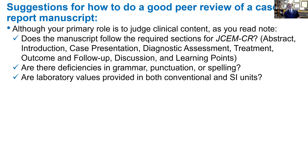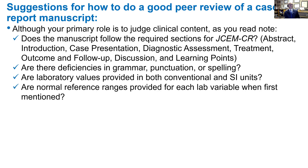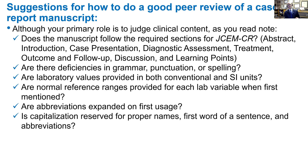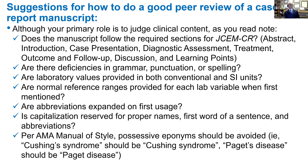Laboratory values should be provided in both conventional and SI units. The normal reference range should be provided for each lab variable when it's first introduced. Abbreviations should be expanded on first usage. Capitalization is reserved for proper names, the first word of a sentence, and abbreviations. Per the AMA Manual of Style, possessive eponyms should be avoided — Cushing's syndrome should be Cushing syndrome, and Paget's disease should be Paget disease. These disorders do not belong to Cushing or Paget; they belong to the patient.